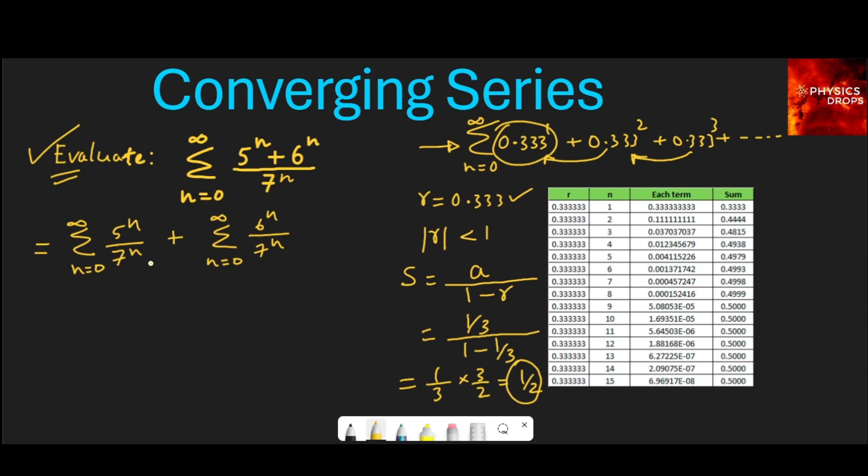Just split this into two fractions to keep it simple: 5/7 whole to the power n plus sum n equals 0 to infinity of 6/7 whole to the power n.